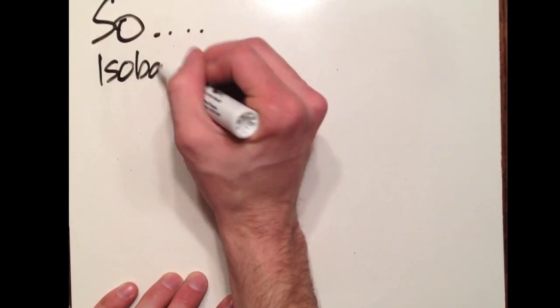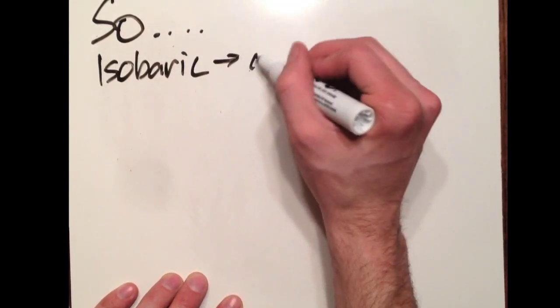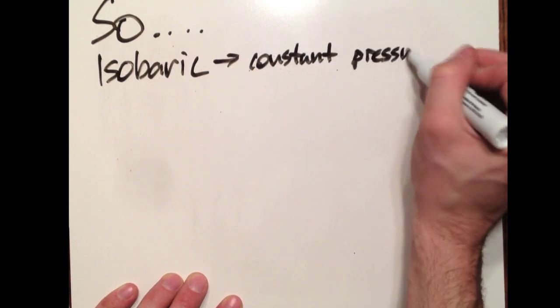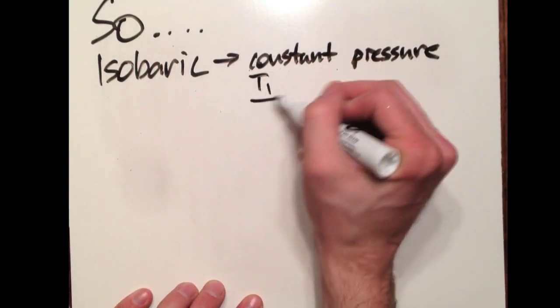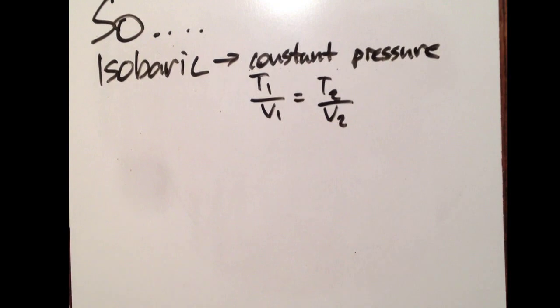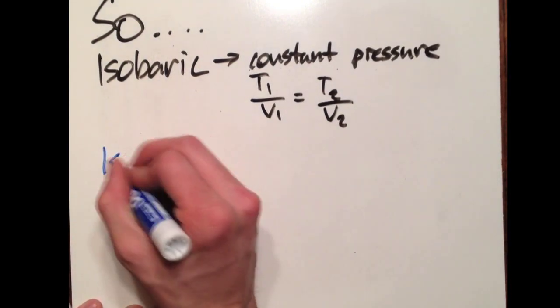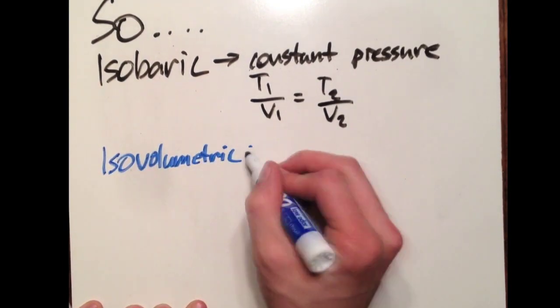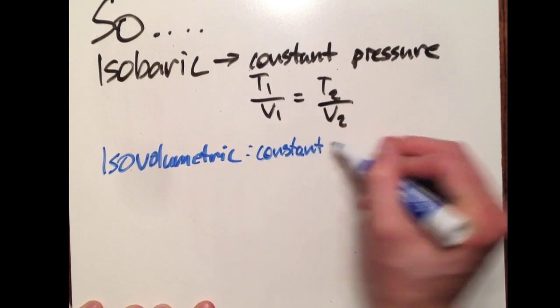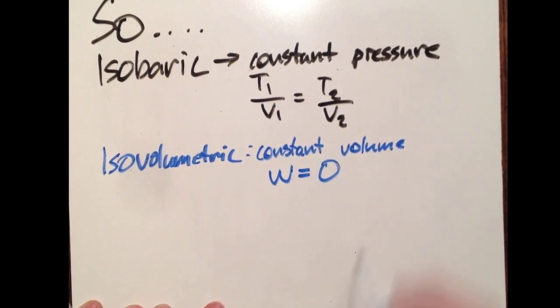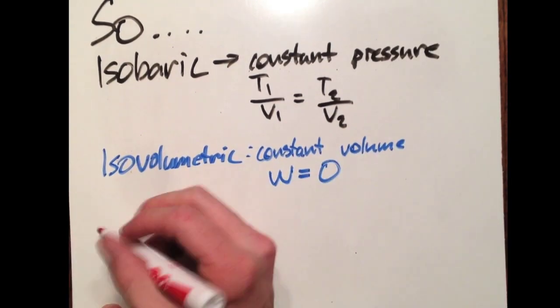So in summation for our processes, isobaric, constant pressure. The piston is free to move up and down. You can utilize the ideal gas law, T1 over V1 equals T2 over V2. Isovolumetric, constant volume. The piston is locked in place and your work is zero.